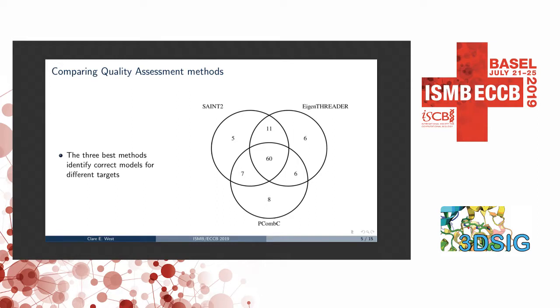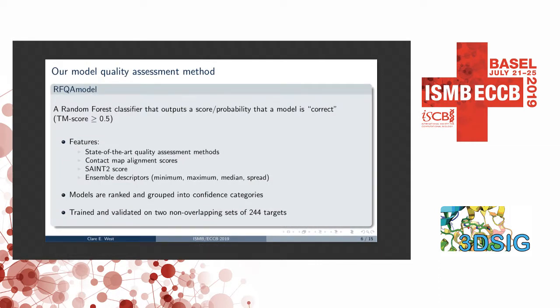We combined all of these methods into a single method, and we also wanted to make it possible to identify not just a good model at the top, but to tell us when we have a good model at the top. To do this, we trained a random forest classifier that classifies individual models as correct or incorrect. To label these models, we used a TM score cutoff of 0.5, which corresponds to being in the same overall fold as the native structure. The features that went into this random forest classifier were the state-of-the-art quality assessment methods, contact map alignment scores, the SAINT2 scores, and ensemble descriptors — the maximum, minimum, median, and spread across the ensemble of 500 models for each of the different scores.